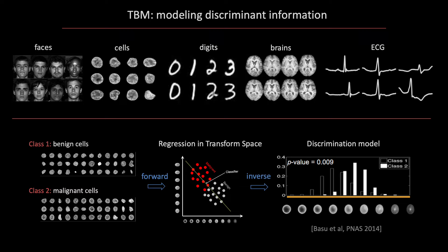One application is transport-based morphometry, or TBM, where given a labeled database of different classes, the goal is to produce a model of the discriminant information between these classes. We may want to discover morphological differences between male and female faces, serious versus smiling faces, or in cell imaging, differences between cells from benign versus malignant tumors, normal versus diseased brains, or normal versus abnormal EKG signals. Here is a graphical description for the cell morphometry problem.